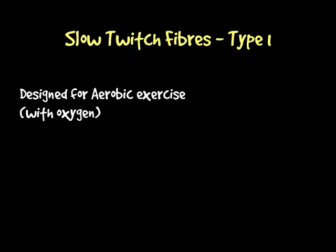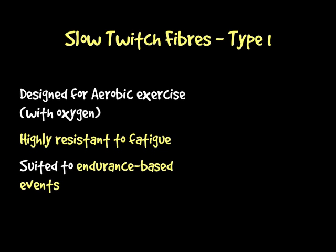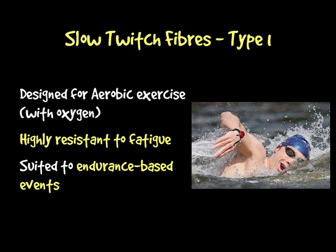Slow twitch fibres, type 1, are generally designed for aerobic exercise — any activity where you engulf oxygen into your body to work your muscles or keep them going for long periods of time. These fibres are highly resistant to fatigue; they don't tire easily so they can just keep going for long periods. They are suited to endurance based events such as open water swimming, marathon running, or 10,000 metres — such as Mo Farah's event.